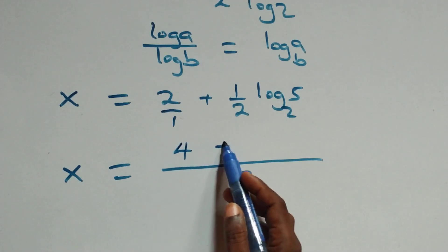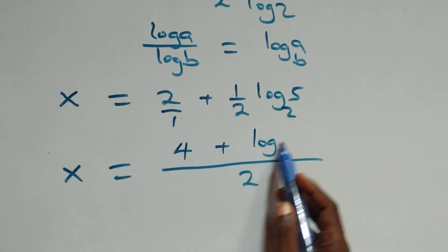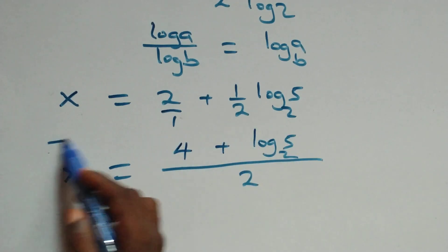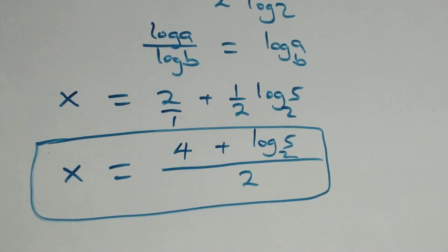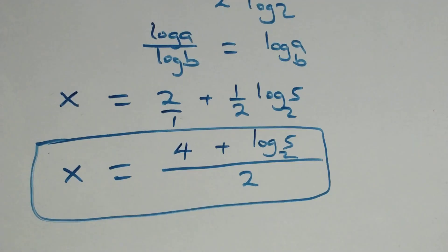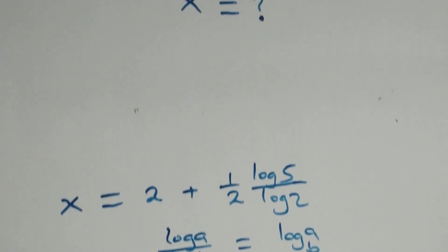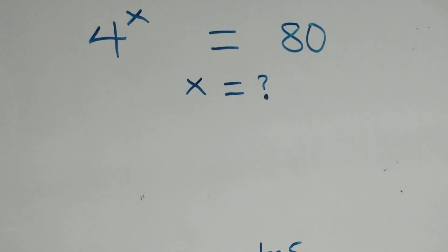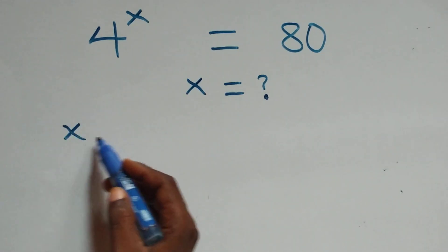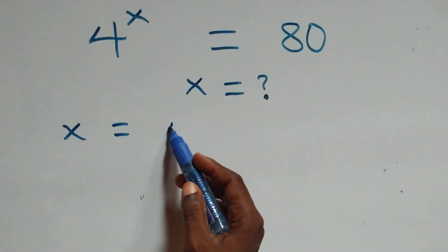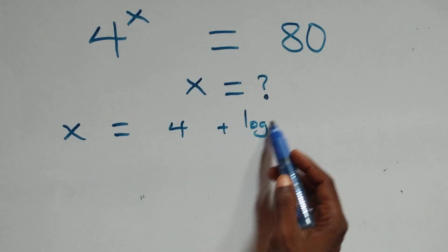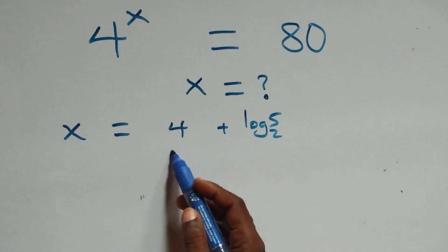Combining as one fraction over 2, we get x equals 4 plus log base 2 of 5, all over 2. Now let's verify this satisfies the original problem by substituting the value of x back in.